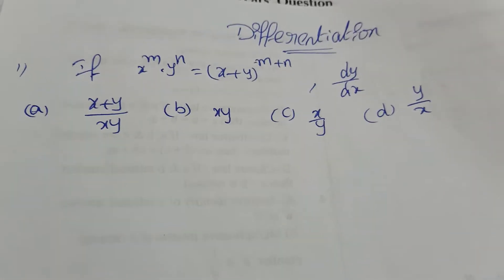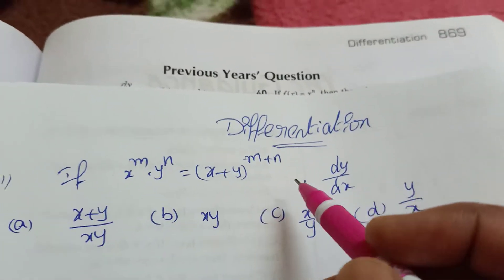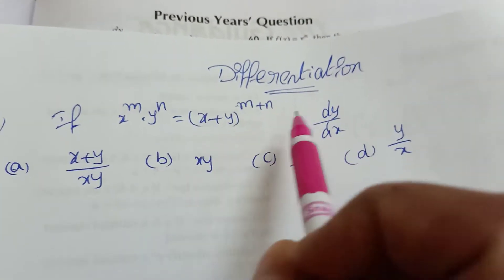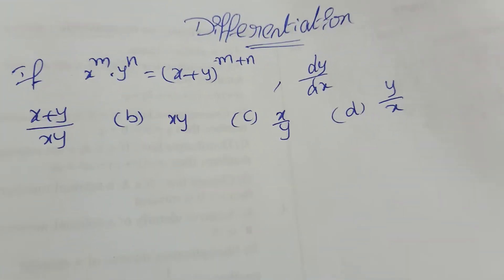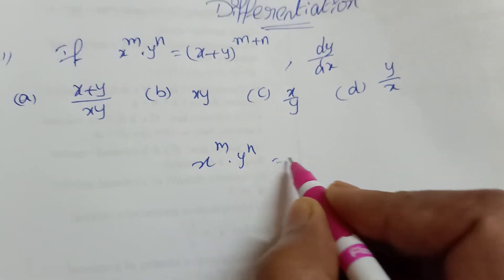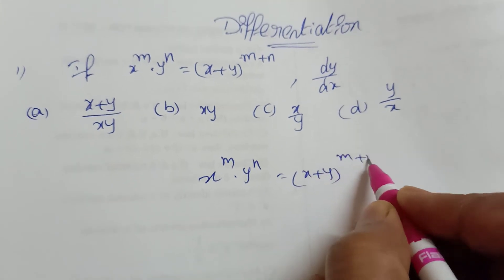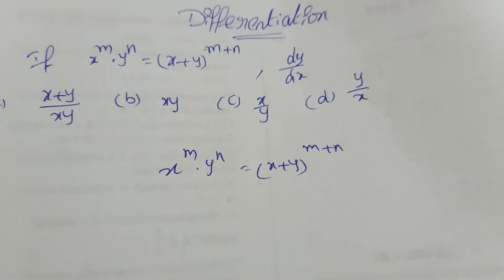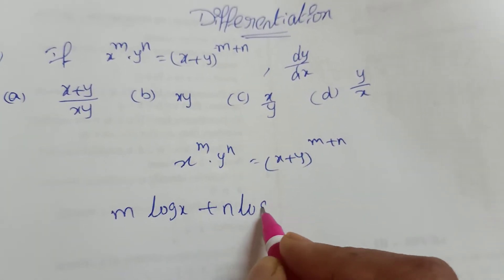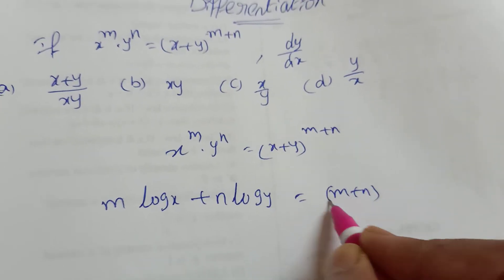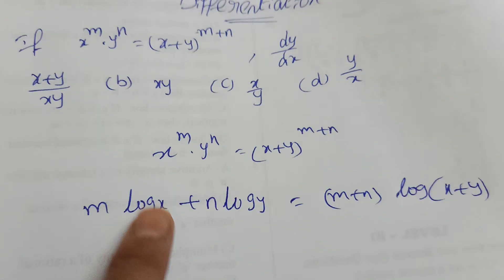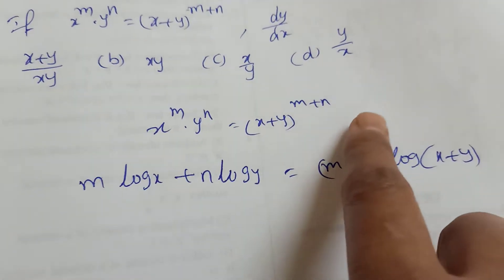Here powers are there. Already I explained before in so many videos — see in the playlist, check that differentiation topic, previous years questions. What is the question? x power m into y power n equal to x plus y whole power m plus n. Here power is there, then the technique is to take log. I am directly writing: m log x plus n log y equal to m plus n into log of x plus y.